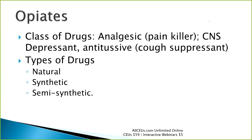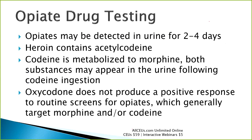Types of opiates can be natural, synthetic, or semi-synthetic. Whether natural, semi-synthetic, or synthetic, they're going to have a similar action. If they're produced in a lab under a controlled setting, they'll be more consistent between batches.